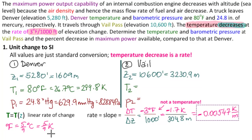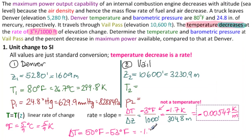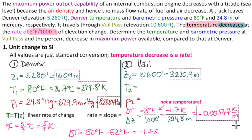If you forget the conversion factor, you can calculate delta T by picking two temperatures differing by 3 degrees Fahrenheit — for example, 50 and 47 degrees Fahrenheit — convert each to Kelvin, and take the difference; this also gives −1.7 Kelvin. So in summary, our converted values are: Z1 = 1,609.3 m, Z2 = 3,230.9 m, T1 = 299.8 K, P1 = 82,884 Pa, and the rate of temperature change is −0.00547 Kelvin per meter.